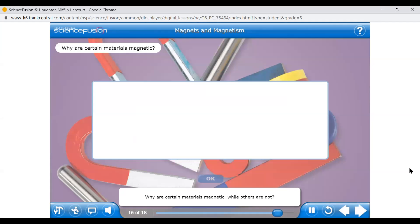Why are certain materials magnetic while others are not? Use what you've learned about the magnetic properties of certain materials to answer this question. Type your response in the space provided. Click OK when you're done. I'm going to move to the next slide since you are unable to type into this lesson.